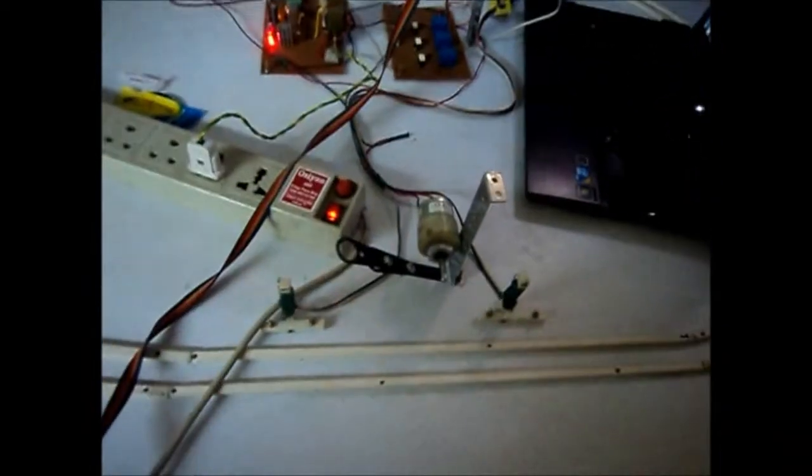This is basically a railway automation with railway gate automation. When the train comes nearer to one railway gate, it should close the gate, and when the train goes off, it should again open the gate. This is how it should work.